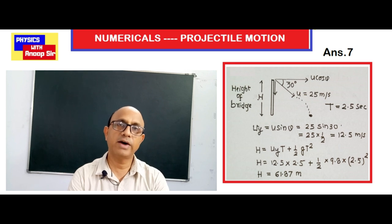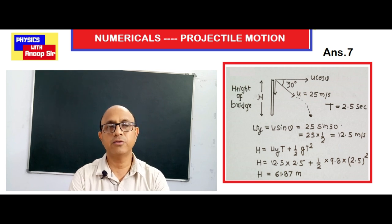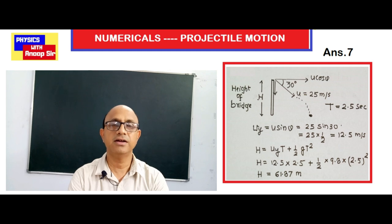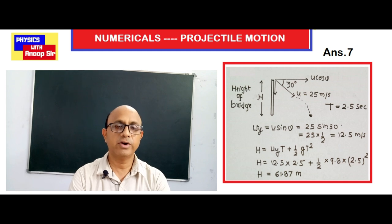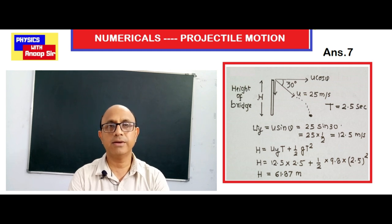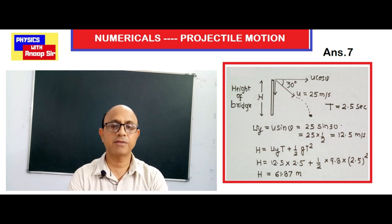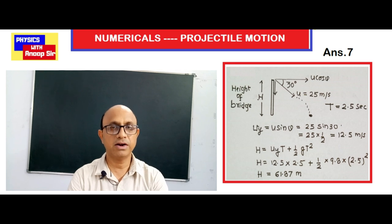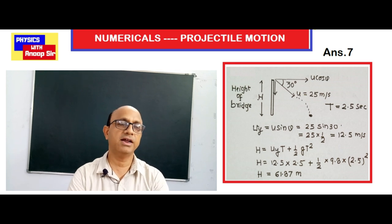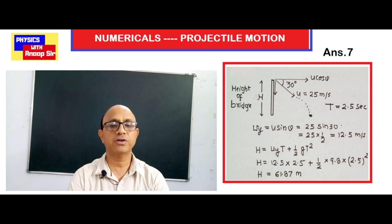First we calculate the vertical component: u_y = u sinθ = 25 × sin30° = 25 × (1/2) = 12.5 meter per second.